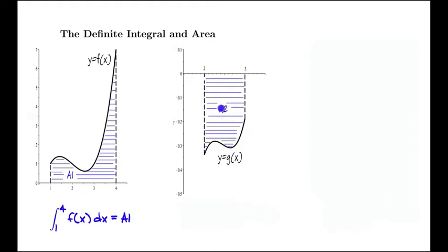Now, if the region that we have is below the x-axis instead of above the x-axis, this is a positive area. But when we take the definite integral from 2 to 3 of this function g of x, we get back negative this area.